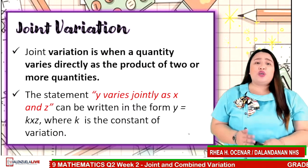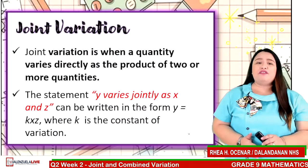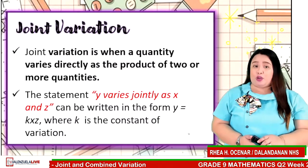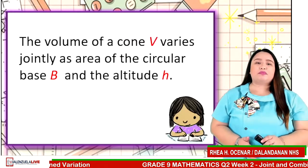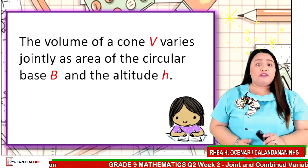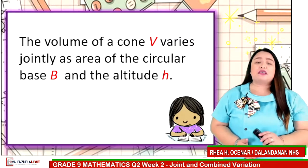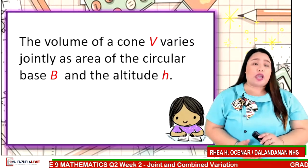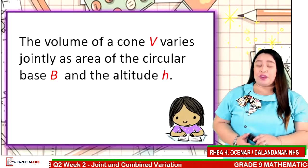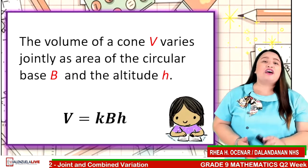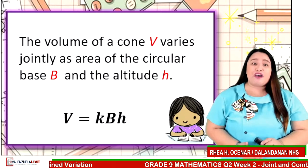Using the concept of joint variation, let us translate the following variation statements into mathematical equations. You can type your answer in the chat box. The volume of a cone V varies jointly as the area of the circular base B and altitude H. The answer is V is equal to kBH.